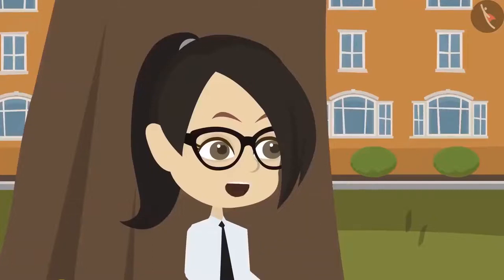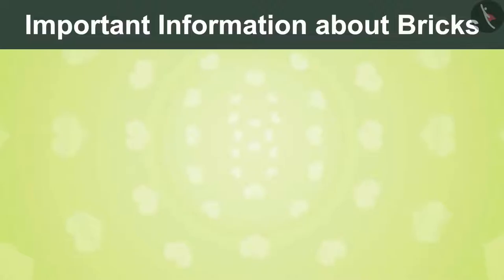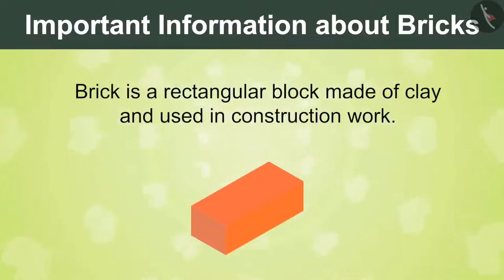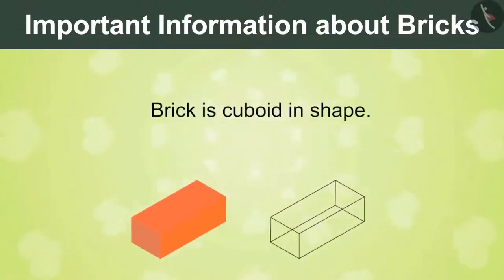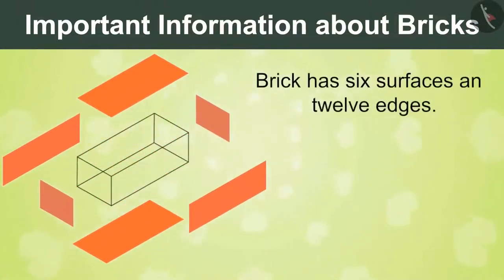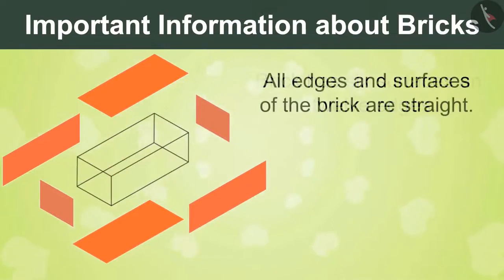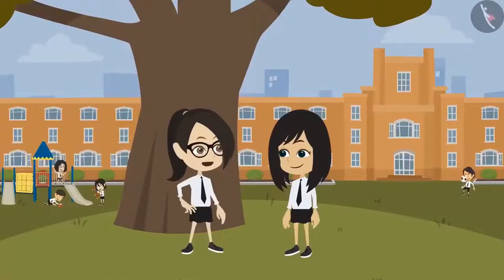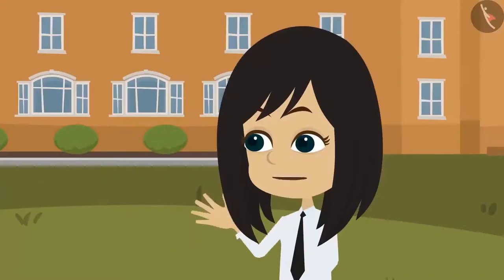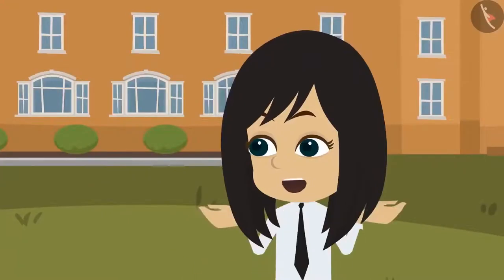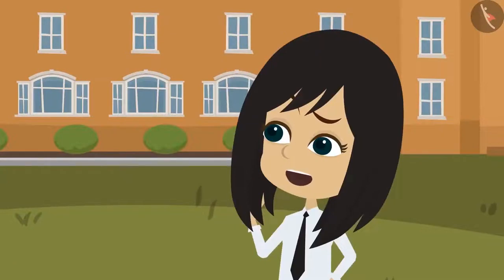Neha, I know all the information about bricks now. Bricks are made by baking clay, they are used for construction work, and they are in the shape of a cuboid. A brick has 6 surfaces and 12 edges, and all the edges and surfaces are straight. But I think the real fun would be to make something with them. Vandana, where can I learn more about the uses of bricks? I would like to know more.